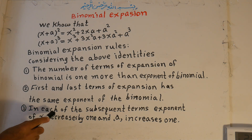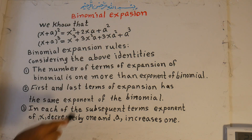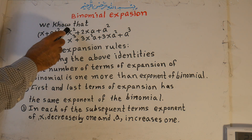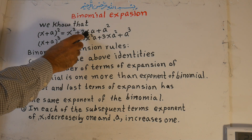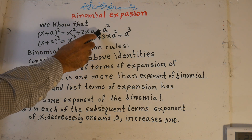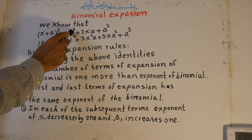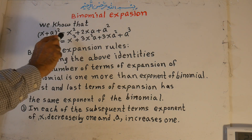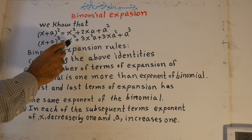Number three: in each of the subsequent terms — meaning the following terms — the exponents of x decrease by 1 and the exponents of a increase by 1. Here the exponent of x is 2, then 1, then 0. The exponent of a is 0, then 1, then 2. For the cubic case, x goes 3, 2, 1, 0 and a goes 0, 1, 2, 3.